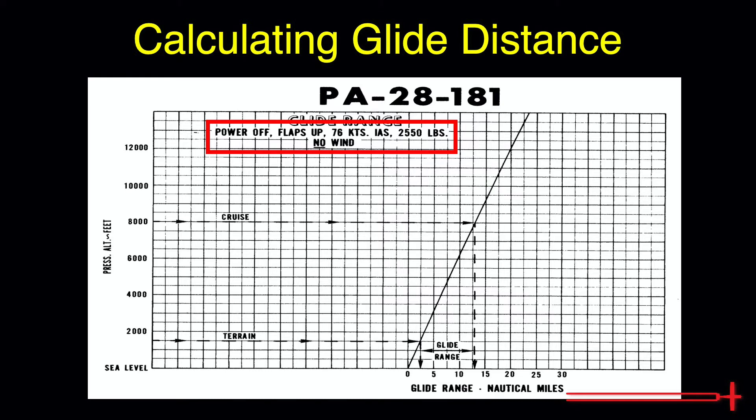We see that these distances reflect the power off glide range with the flaps up at 76 knots indicated or best glide speed at 2,550 pounds with no wind. Any change in these conditions will of course alter glide distance.